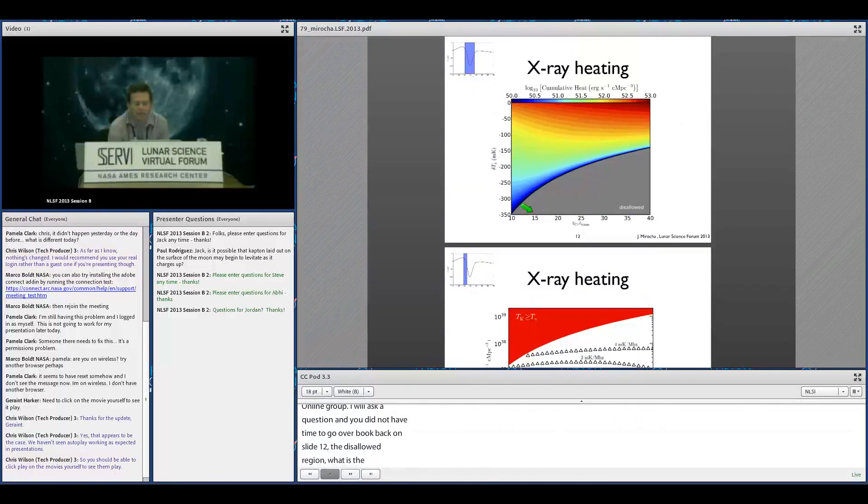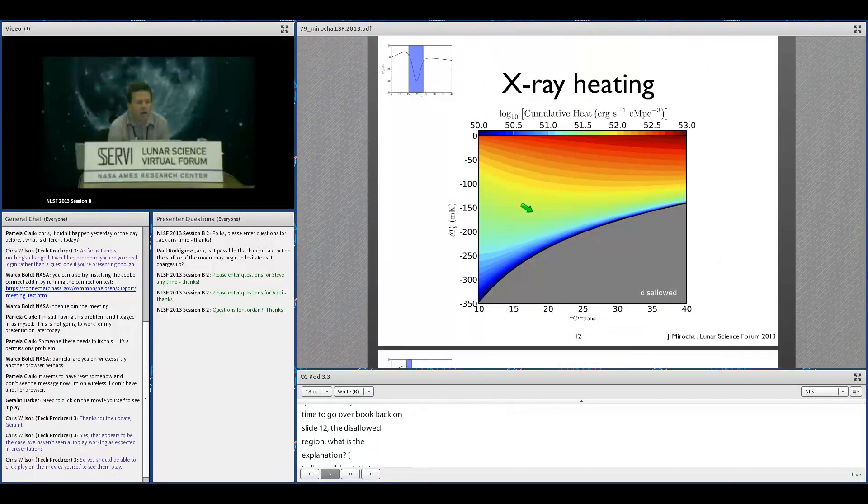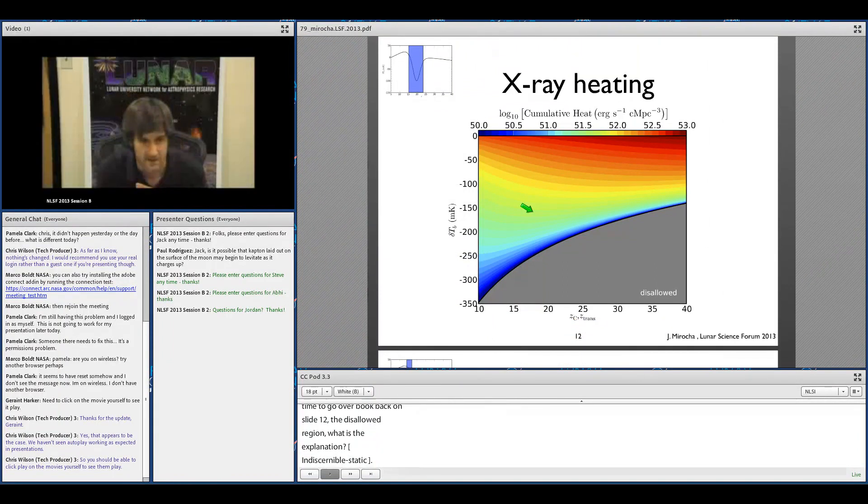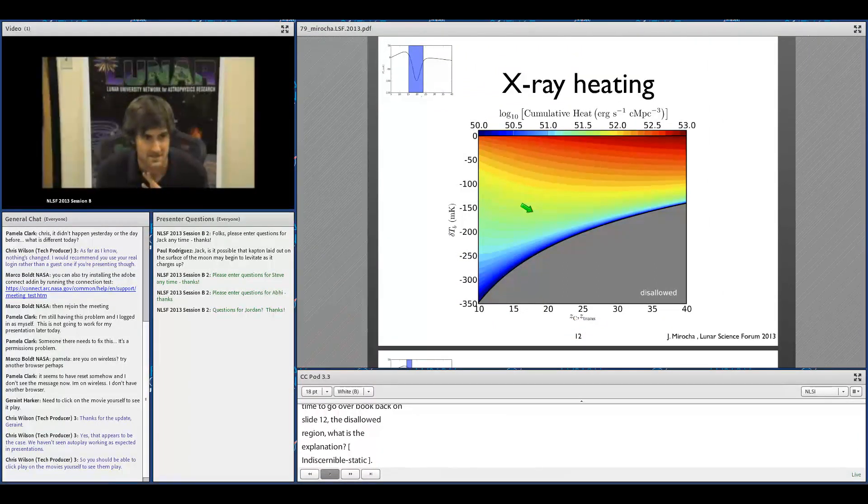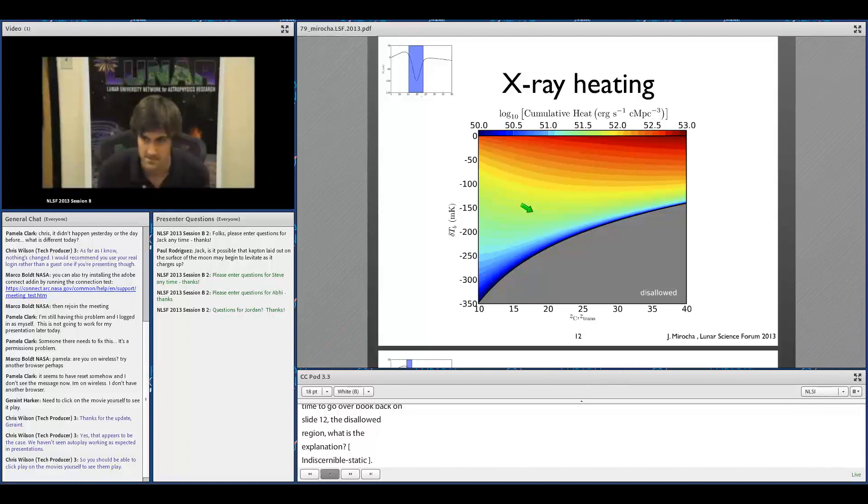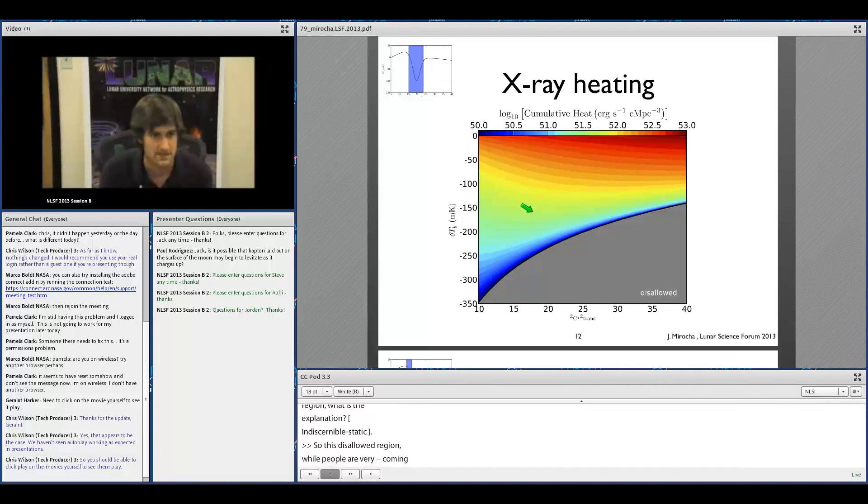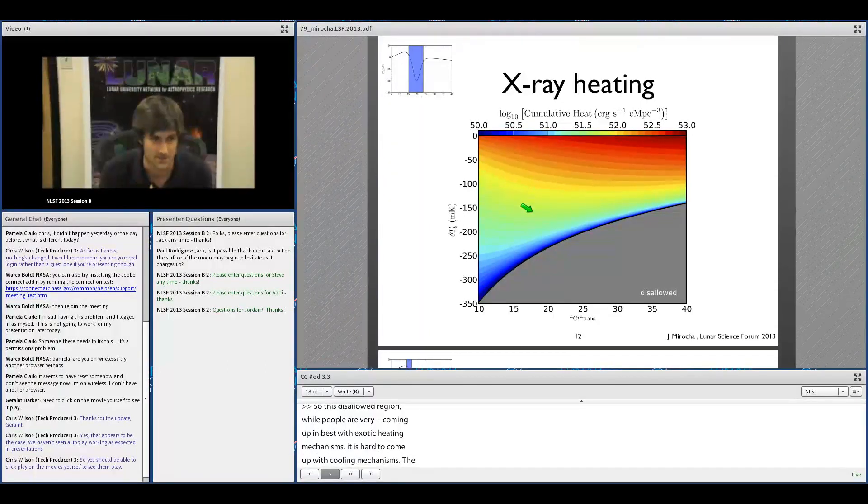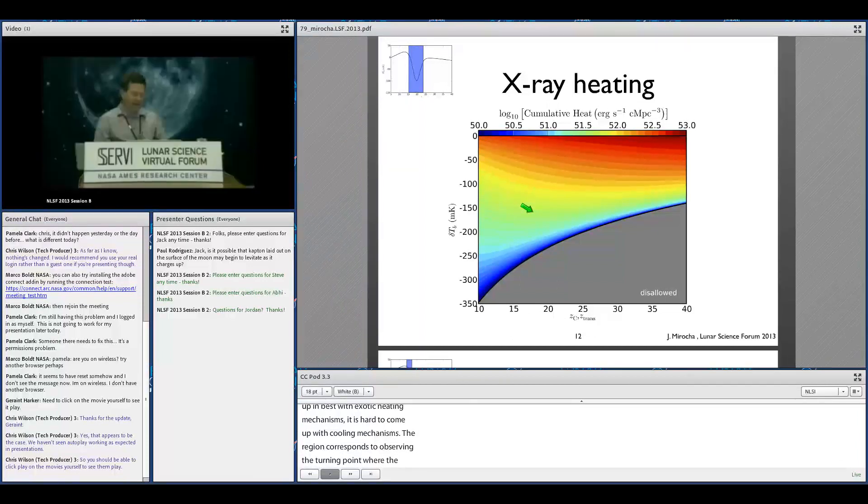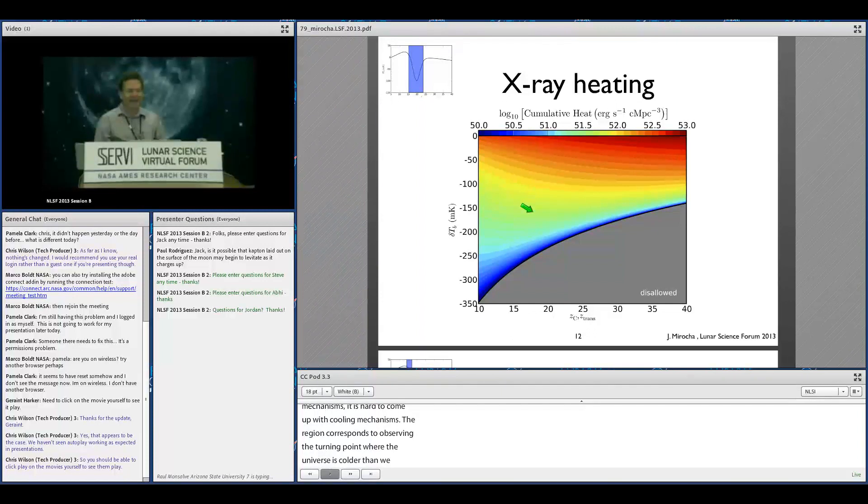Yeah, on the x-ray heating. Right. So this disallowed region is disallowed because while people are very good at coming up with exotic heating mechanisms in the universe, it's very hard to think of exotic cooling mechanisms that would allow the universe to cool faster than adiabatic cooling. So this region corresponds to observing the turning point where the universe is colder than we think it could possibly be at that redshift. Okay, got it. That makes sense. Thank you. All right, thanks again. Really enjoyed your talk and really looking forward.